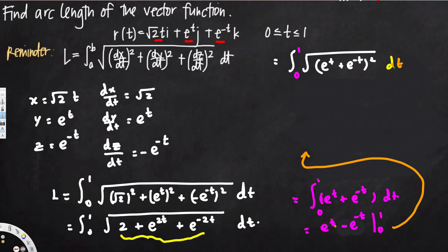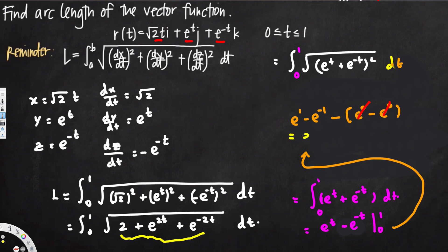Plugging in the limits: at t=1 we get e^1 minus e^(−1), and at t=0 we get e^0 minus e^0 which is 0. Those two terms cancel, so our final answer is e minus e^(−1).